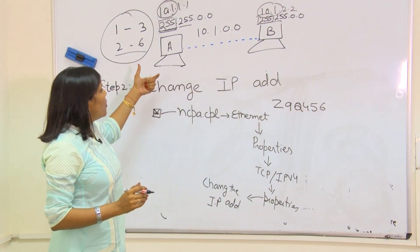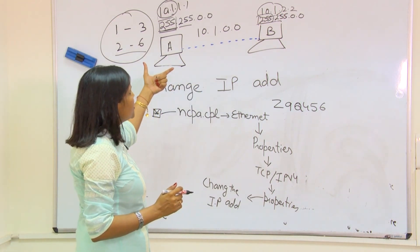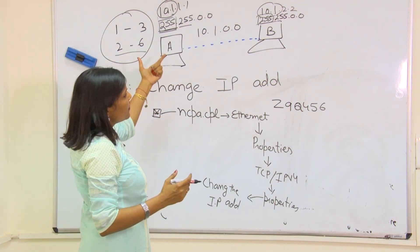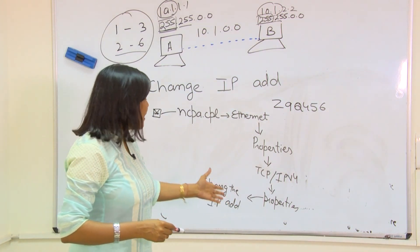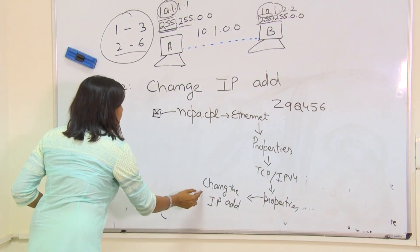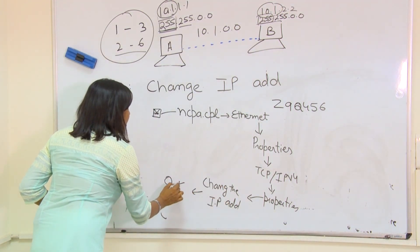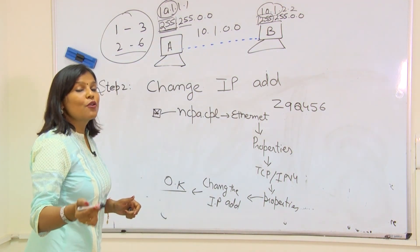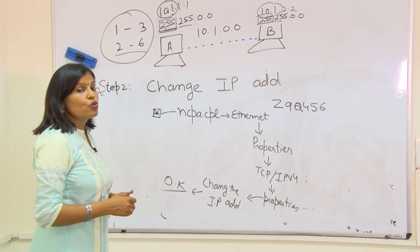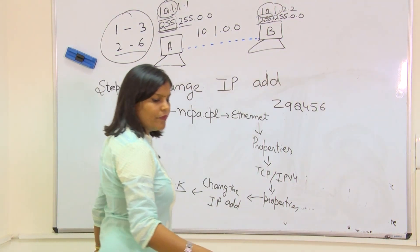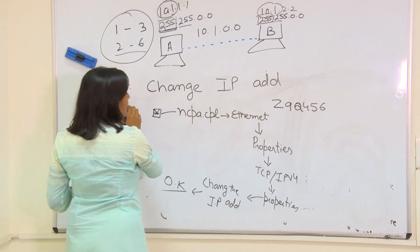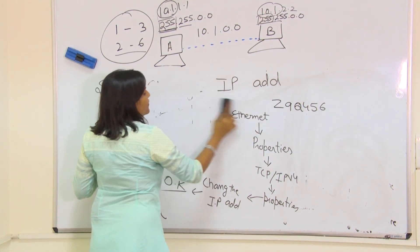Now when you change this IP address and subnet mask, after pressing OK, this completes our almost whole process. Go towards the third step, that is the ending process - verify the connectivity.